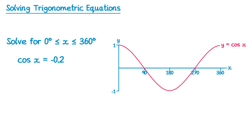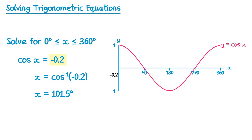Let's have a look at a second example. This time cos of x equals negative 0.2. We start by doing inverse cos of negative 0.2, and with your calculator that gets you 101.5 degrees — again, rounded to one decimal place. Now we mark negative 0.2 on the axes, draw a horizontal line, and you'll see there are two intersection points.